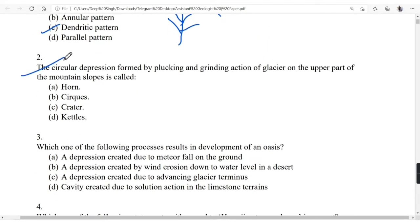Next, the circular depression formed by the plucking and grinding action of the glacier on the upper part of mountain slopes is called cirque. As you have seen in my previous video of assistant geologist 2018, I showed a few landforms which can be formed by the glacier. Between some glaciers you will find a circular depression which will be formed by the plucking and grinding action of the glacier, and it gets filled with water also.